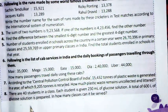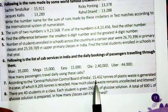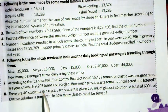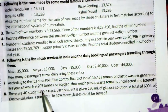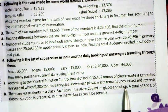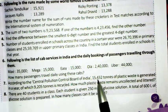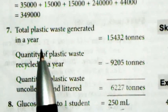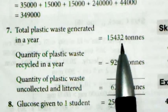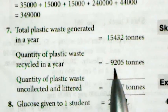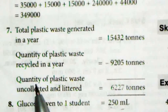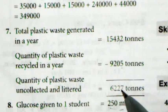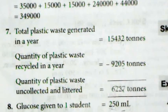Next sum: according to the Central Pollution Control Board of India, 15,432 tonnes of plastic waste is generated in a year, of which 9,205 tonnes is recycled. How much plastic waste remains uncollected and littered? Hum total plastic waste mein se recycled quantity subtract kar denge, to remaining plastic waste mil jayega.